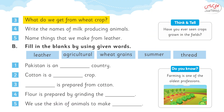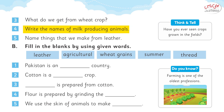Question number three: What do we get from wheat crop? We get wheat grains from wheat crops. Flour is prepared by grinding the wheat grains. Wheat flour is used to make roti, and we prepare bread, biscuits, and many other things from wheat. If you want, you can summarize this answer in your own words. The next question: write the names of milk producing animals. We get milk and meat from buffaloes, cows, camels, and goats.